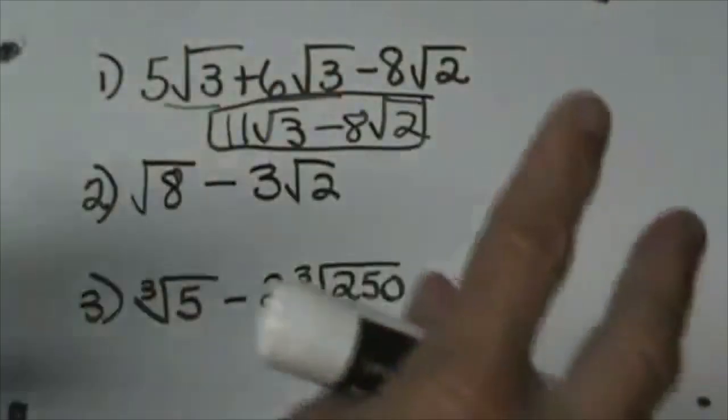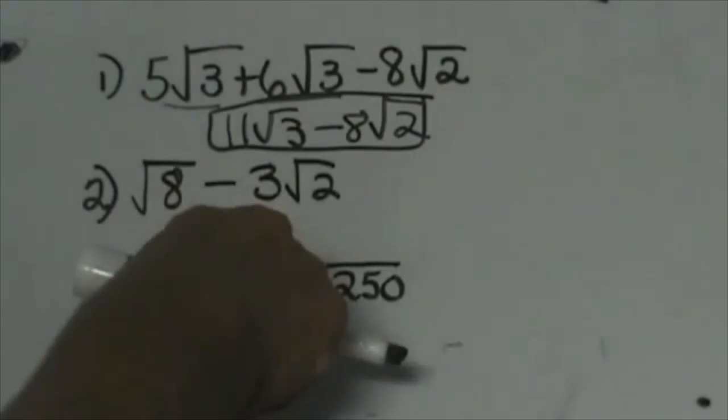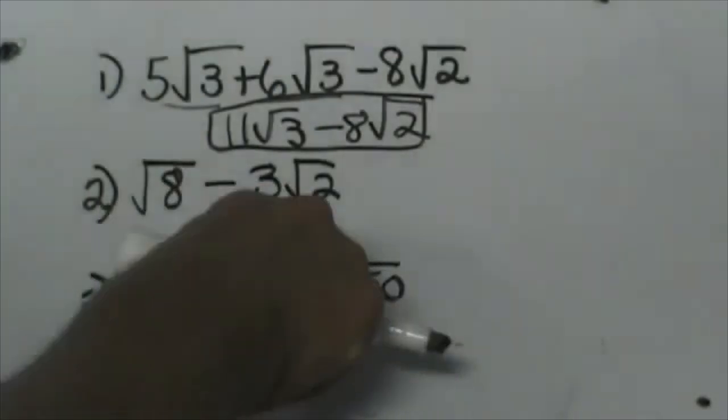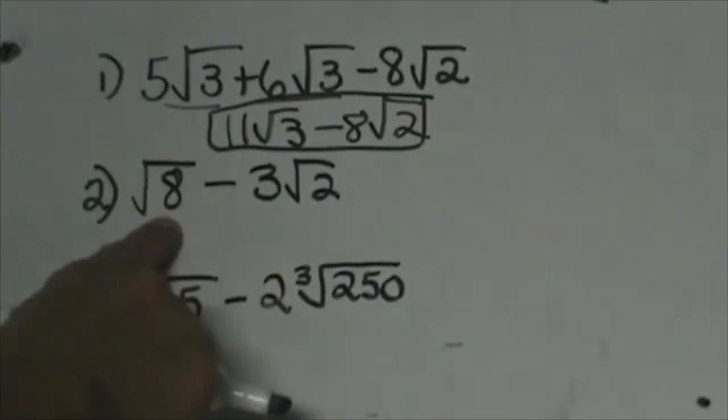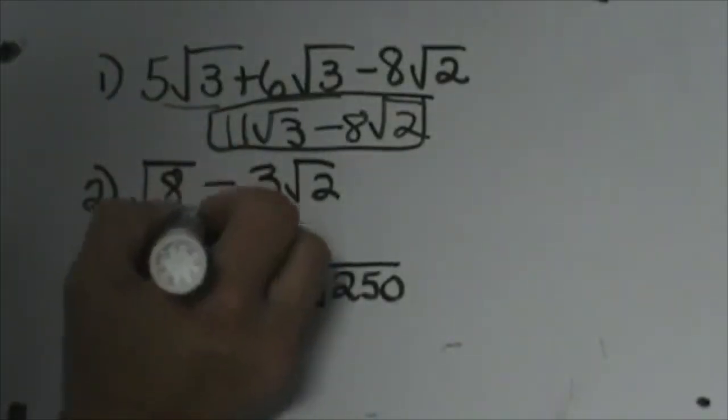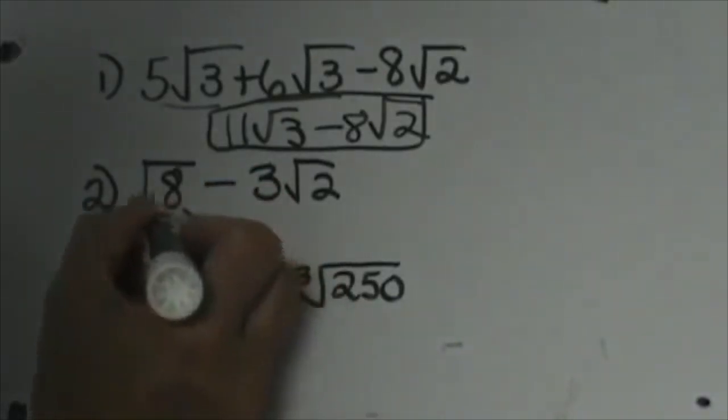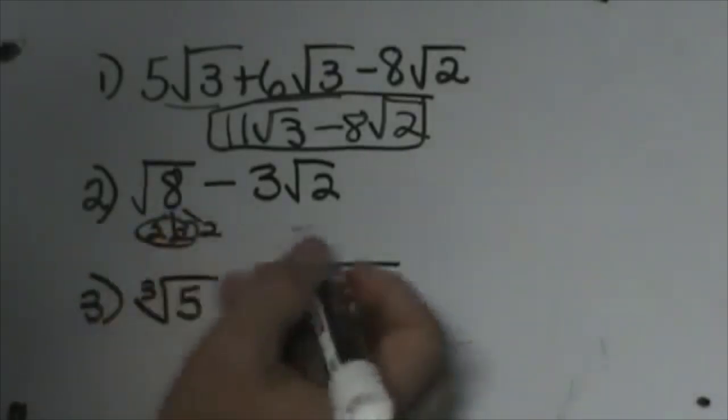Adding is kind of like combining like terms. Let's look at this one: √8 - 3√2. It doesn't look like we can add those together, but we actually can because √8 can be simplified. If you remember, the square root of 8 is 2 times 2 times 2, so we can take out a 2 and leave the √2 under the radical.